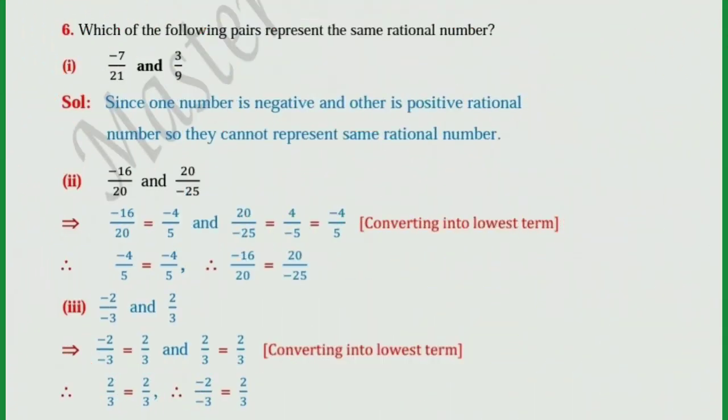Sum number 6: which of the following pairs represent the same rational numbers? First one: minus 7 upon 21 and 3 upon 9. Solution: since one number is negative and the other number is a positive rational number, they cannot represent the same rational number.